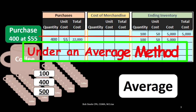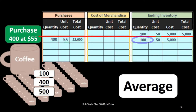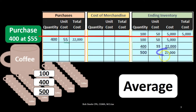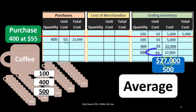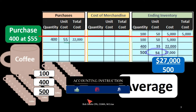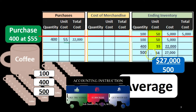Under an average method, we're going to take the average. We take the 100 units at $50 plus the 400 units at $55. First we count the total number of units: 100 plus 400 equals 500. Then the total dollar amounts: $5,000 plus $22,000 gives us $27,000. If we then take $27,000 divided by 500 units, we get a unit cost of $54. So when we sell these coffee mugs, we're going to say they cost about $54. Notice that none of them actually cost $54 — they cost either $50 or $55 — but the average is $54.